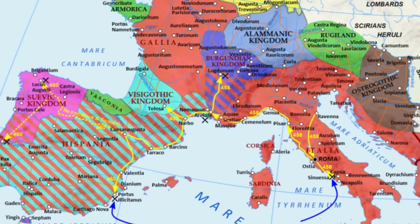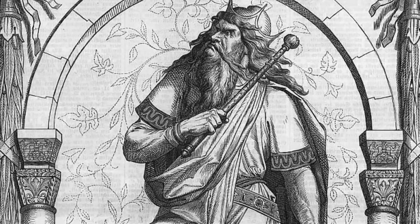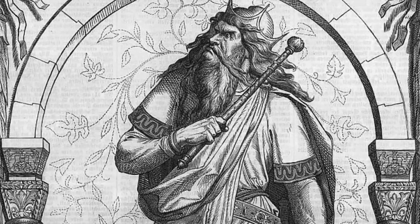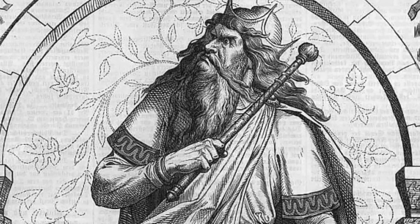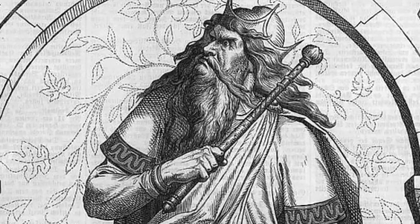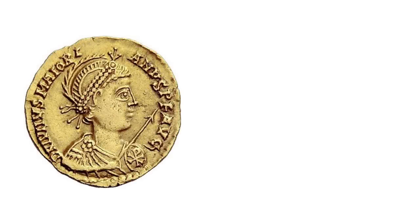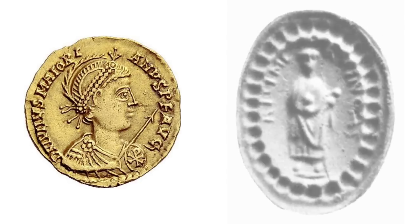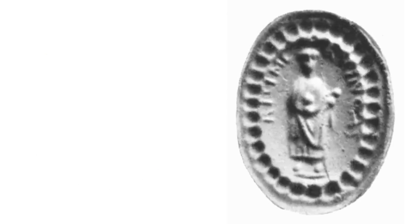In 460, he planned to launch an invasion to reconquer Africa, but his planned invasion was thwarted by sabotage which destroyed a large part of his fleet, hired by Geiseric, the clever Vandal King. With his invasion thwarted, Majorian disbanded most of his army and returned to Italy, but his associate Ricimer turned on him upon his arrival and had him deposed and executed.